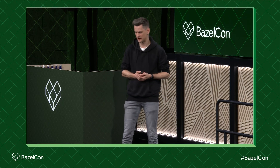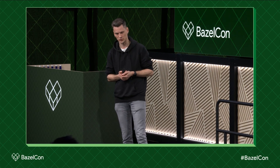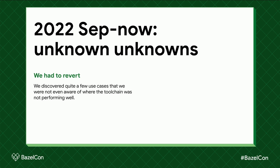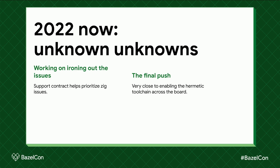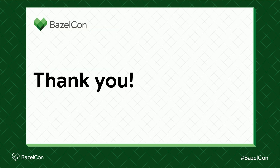Unfortunately we had to revert, because we hit some unforeseen issues. We discovered additional use cases we were not even aware of where the toolchain was not performing well. Essentially everywhere we had looked things looked good, but there were a lot of places where we didn't even know we should be looking. That's the state we're in right now — we're working on ironing out these issues as we discover them. The support contract still helps us prioritize issues with Zig, and we think we're really close to enabling the hermetic toolchain across the board. I really wish this story had ended with 'we have enabled the hermetic toolchain across the board' but it is what it is, and that's the story so far. I hope you took something useful away from this — thank you very much.